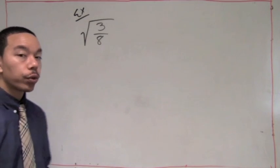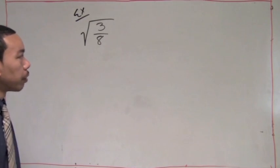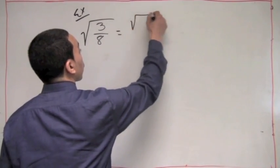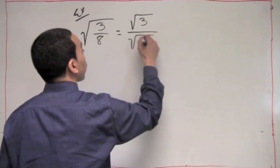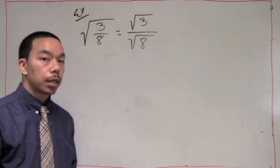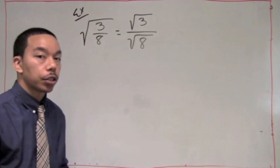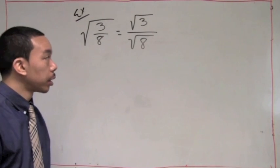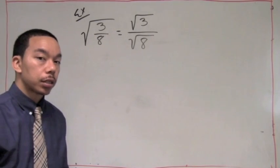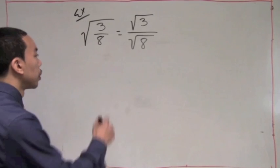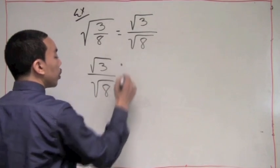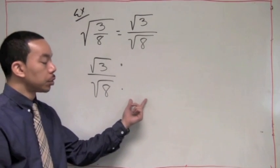Let's look at our next example. We have the square root of 3 over 8. If we think back to our quotient property for radicals, we can rewrite this as the square root of 3 over the square root of 8. Now looking at this, we have a radical in the denominator of this fraction — we cannot have that. That would be considered not simplified if we left it there. So we must rationalize the denominator. I'm going to rewrite this as square root of 3 over the square root of 8 and ask myself: what can I multiply the square root of 8 by to get a perfect square?